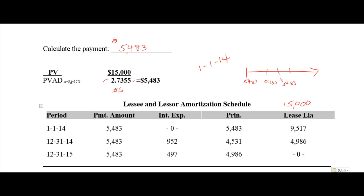Hopefully your amortization schedule looks something like this. On the first day of 2014, you rent a piece of equipment and make a payment on it. Since you get the equipment and make your payment on the very first day, it's an annuity due — there is no interest and the entire payment goes to principal. $15,000 minus $5,483 gives your loan balance after that first payment.